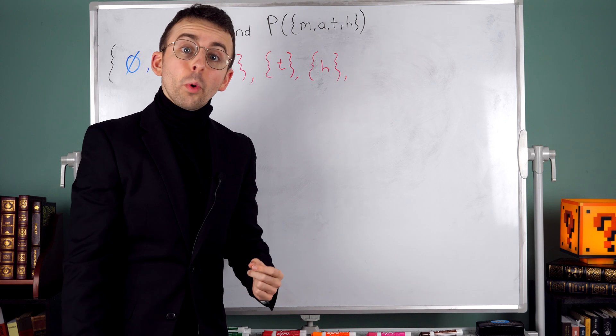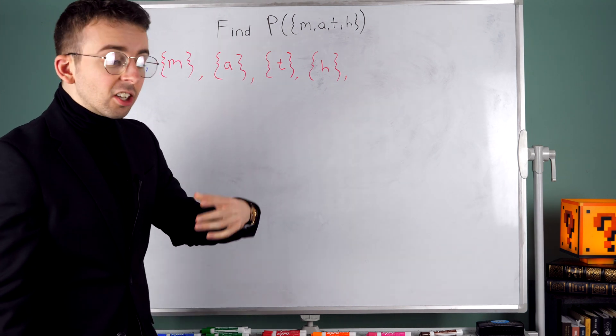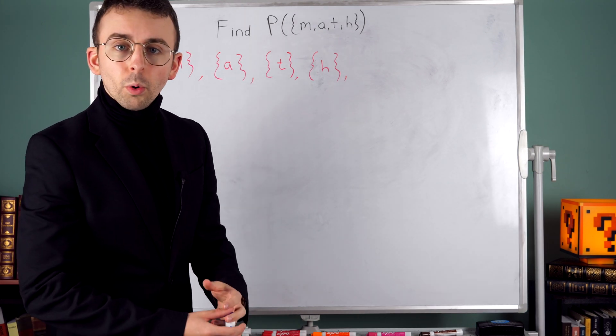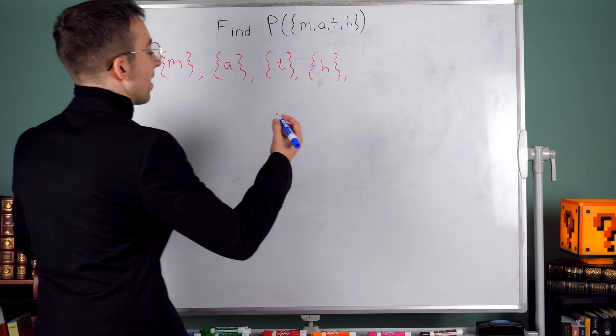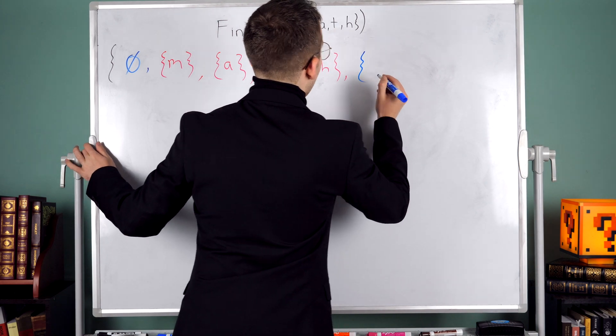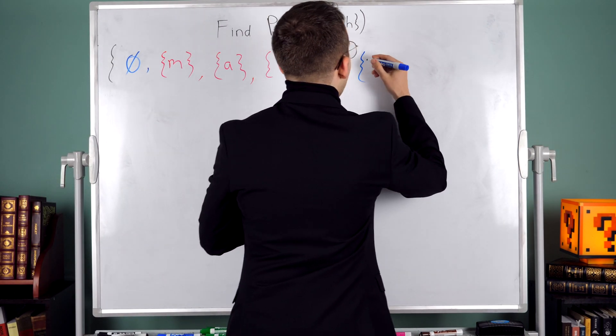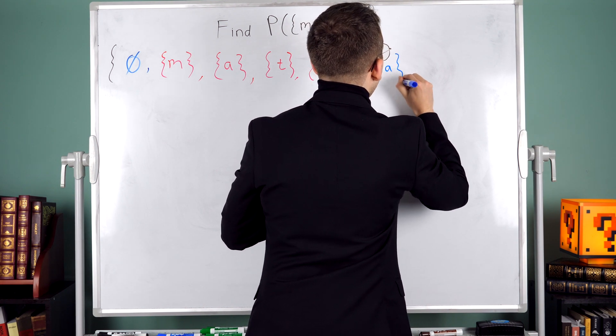Now I'm going to worry about the subsets that have two elements. Going in this step-by-step manner helps me to keep my thoughts orderly and make sure I don't miss anything. Now what subsets have two elements? Well, we could have the letters m and a, so I'll start with that one.